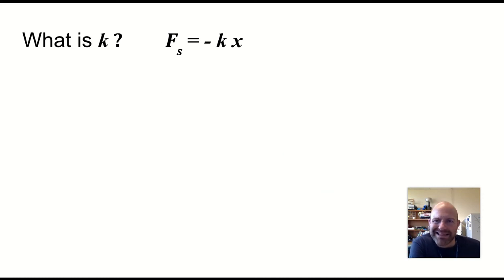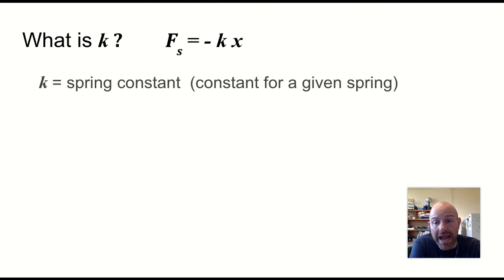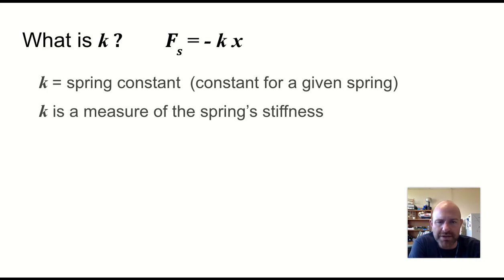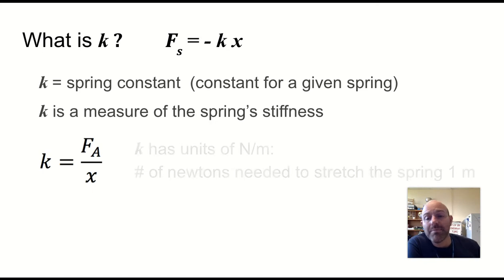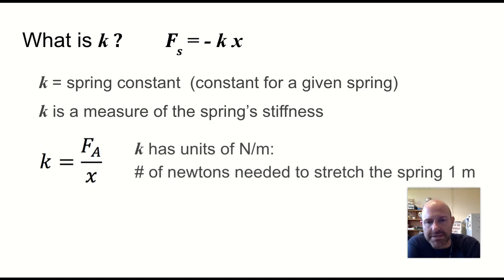So what about that spring constant, that thing k? Well, every spring has one, and every spring is a little bit different. It measures how stiff the spring is. The bigger the k, the harder it is to stretch at a given distance. And we kind of define it as the applied force divided by how far you can stretch the spring. So a really loose spring, you apply a small force, it stretches a really big difference. So that's a very small spring constant. If you have a very stiff spring, you have to apply a really big force to get it to stretch the same distance. So k is units of newtons per meter, the number of newtons required to stretch a spring a meter.